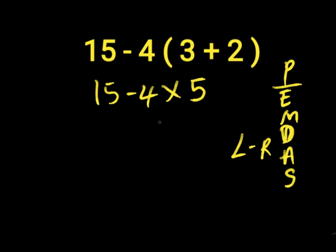4 times 5 will give us 20. Then we have 15 minus 20. 15 minus 20 will give us negative 5. Negative 5 is the correct answer to this expression.